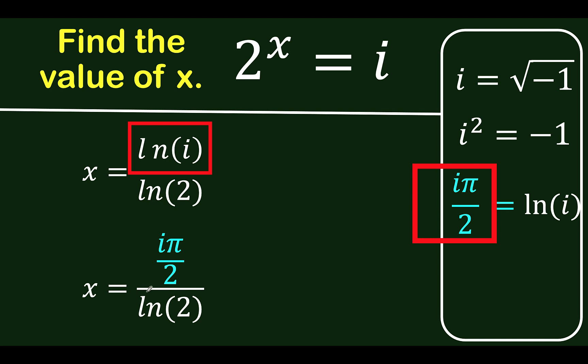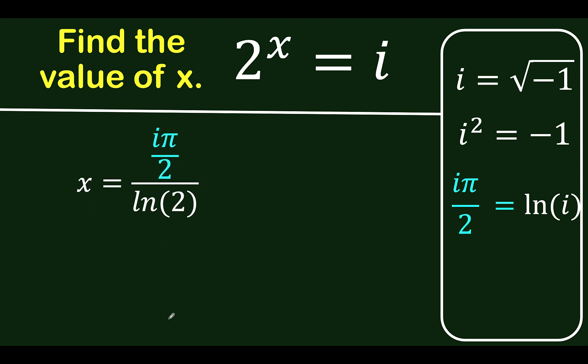Let's do the substitution now. x equals iπ over 2 all over ln of 2, which we can simplify further as iπ over 2 ln of 2 or iπ over ln of 4.